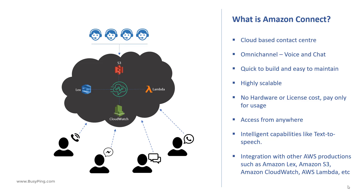Amazon Lex is a conversational bot builder with text-to-speech and natural language understanding capabilities. This is the same technology that powers Alexa. So with this, you can create automated and personalized messages that improve customer experience.